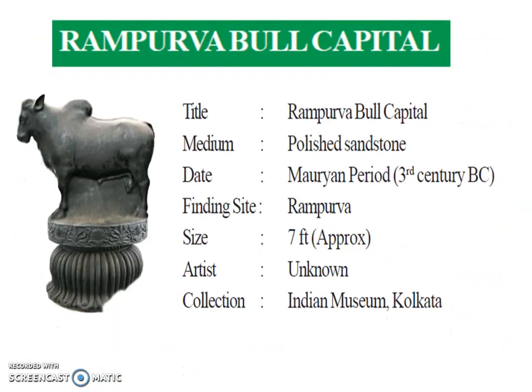Second: Rampurwa Bull Capital. Title is Rampurwa Bull Capital. Medium is polished sandstone. Date is Mauryan period, 3rd century BC. Finding site is Rampurwa. Size is approximately 7 feet. Artist is unknown. Collection is Indian Museum, Kolkata.